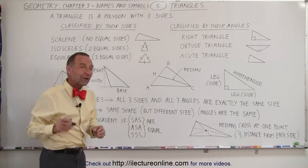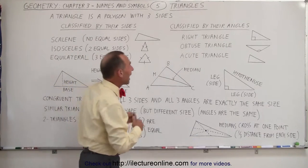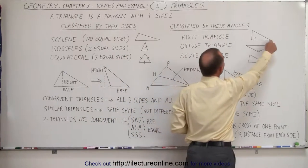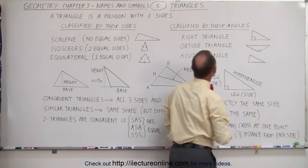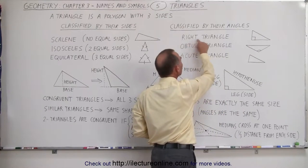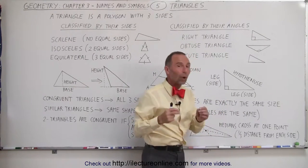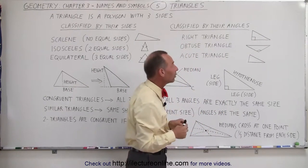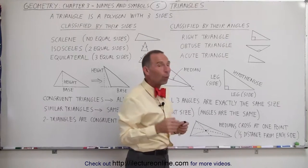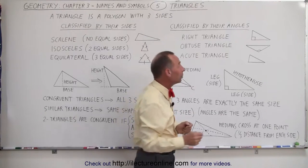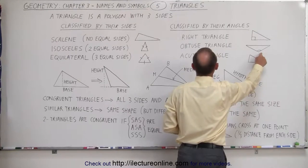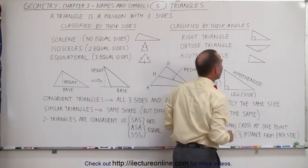We can also classify triangles by their angles. Here we have an example where one of the three angles is equal to 90 degrees. We call that a right triangle because there is one right angle, an angle of 90 degrees. If one of the three angles is greater than 90 degrees, we call it an obtuse triangle.